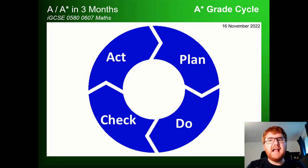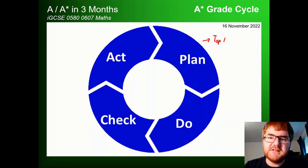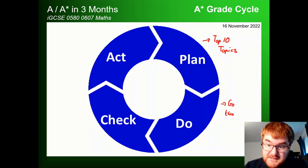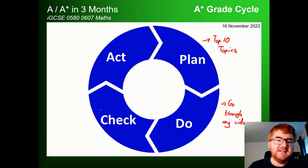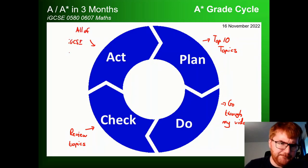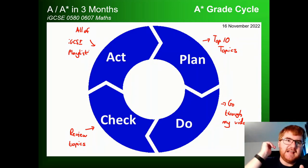So what we're doing here for the A star grade cycle is first of all, the planning stage. So the planning stage is using those top 10 topics. Then the do stage of that, which is go through my video to make sure that you've got those secure, or at least you can identify where those weaknesses are. Then this is in the check cycle at this point. So you're reviewing what topics you found difficult, and then you're acting on that by using the all of IGCSE playlist. So by doing these four steps and going around in this improvement cycle, you act, you plan, you do, you check, and it goes around and around. Again, you're building up then your expertise from a B grade, then to an A grade, and then to an A star grade.